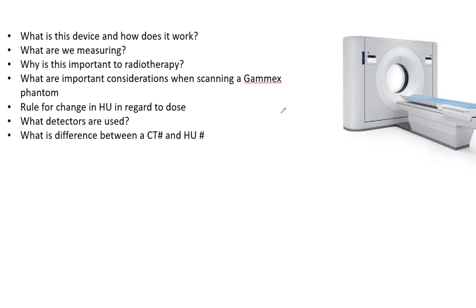Imagine you're taking your oral exam. You see a picture of a CT scanner with a list of questions: What is this? How does it work? What are we measuring? Why is this important to radiotherapy? What are important considerations when scanning a GAMEX phantom? What are the rules for change in HU in regard to dose? What detectors are used within a CT unit? And what is the difference between a CT number and a HU number?